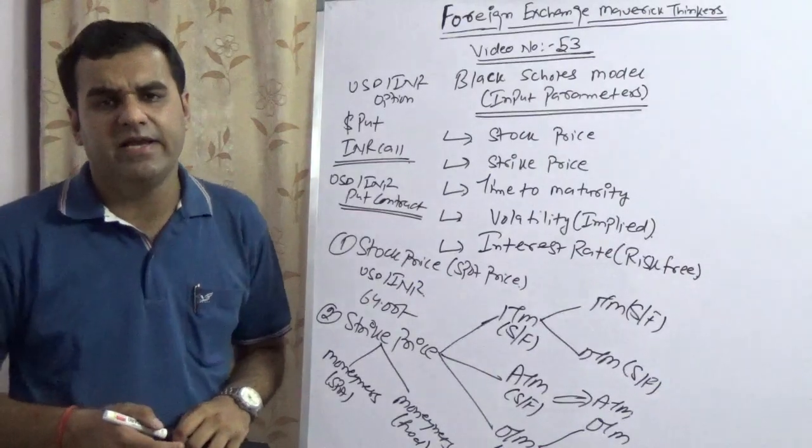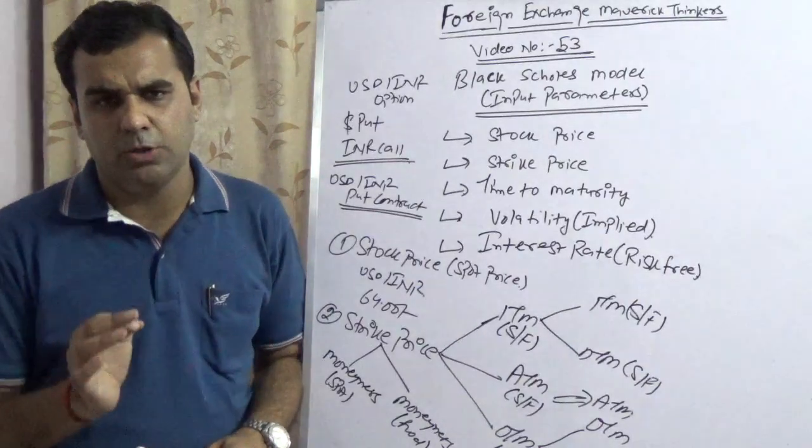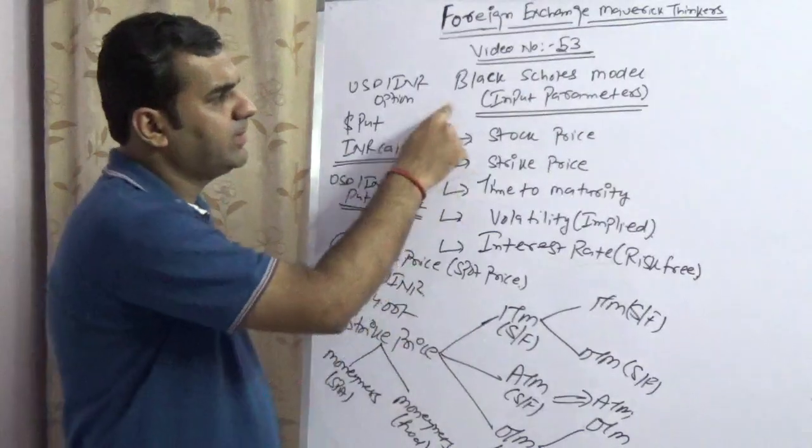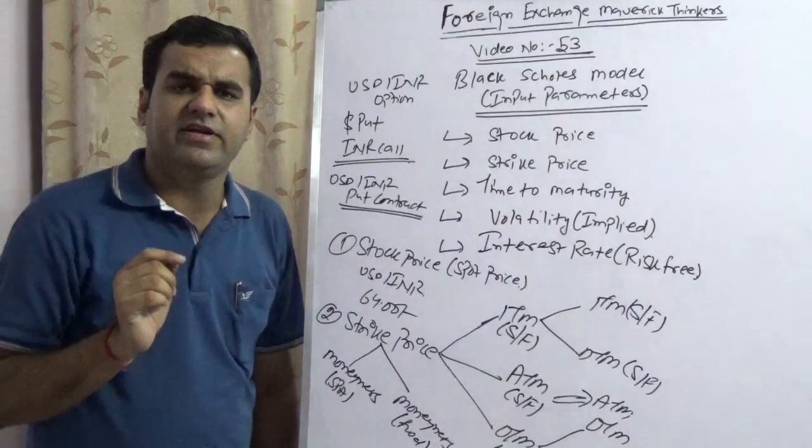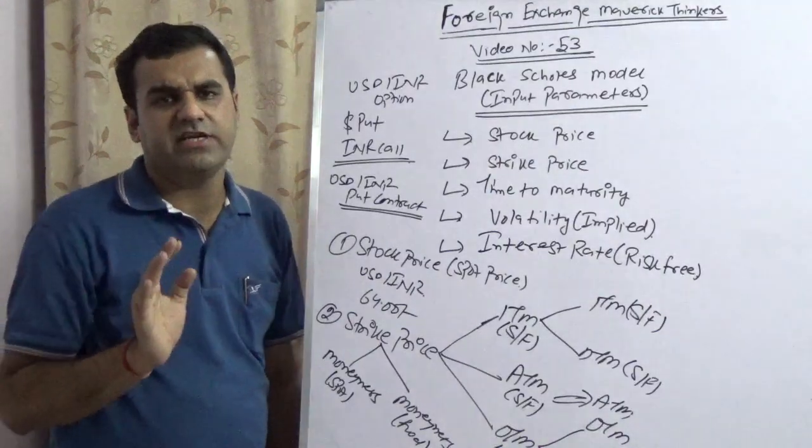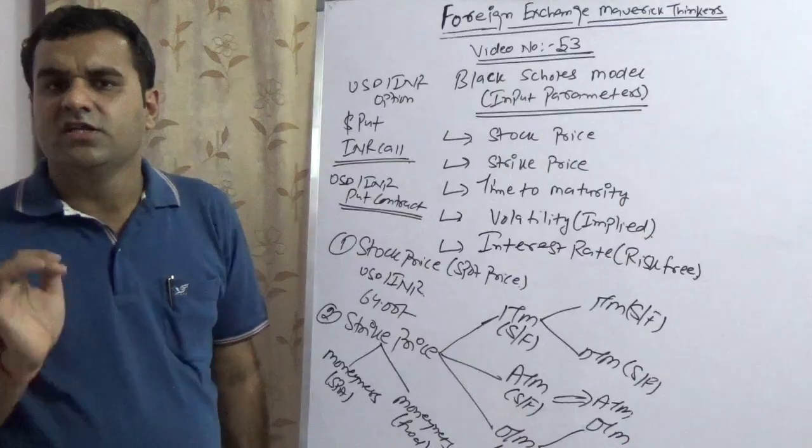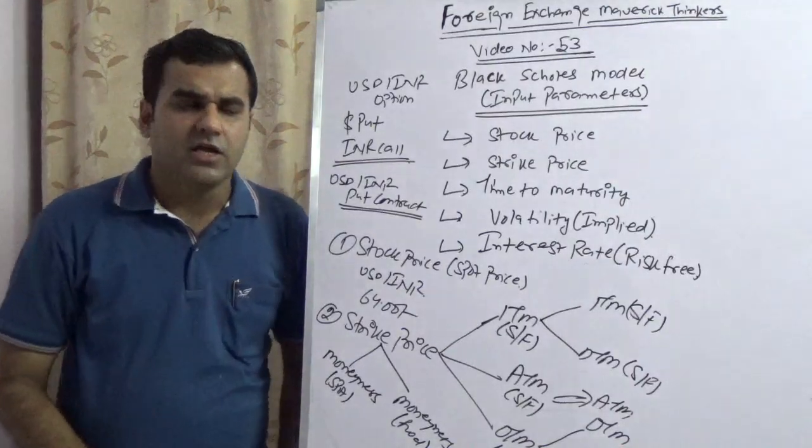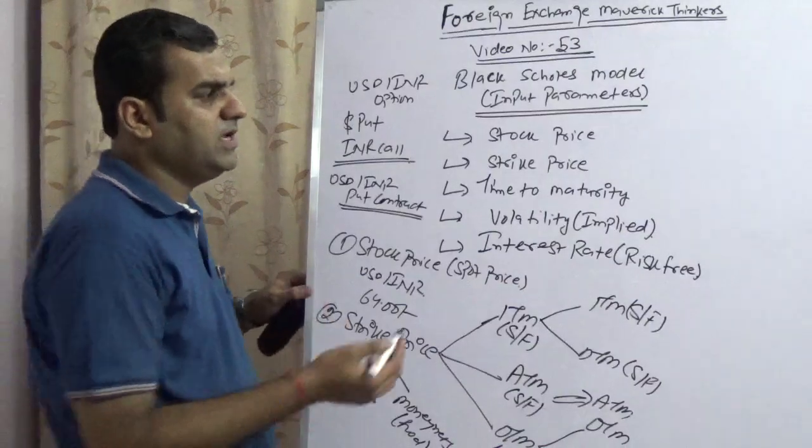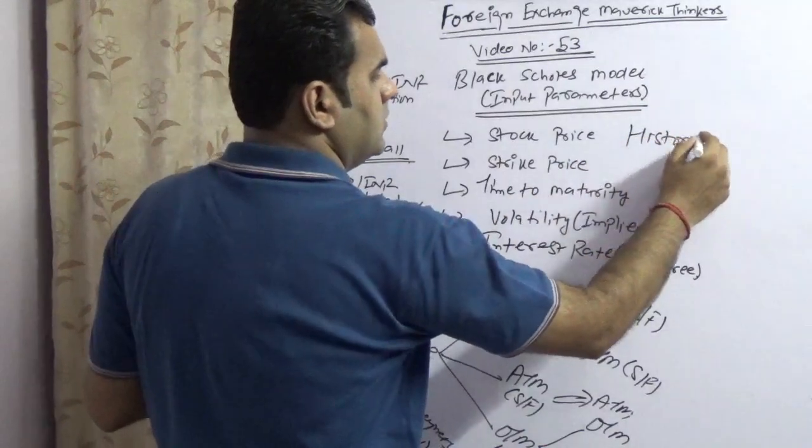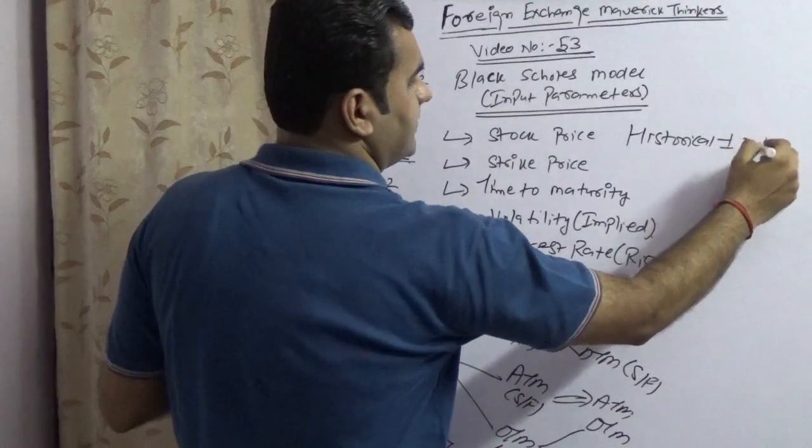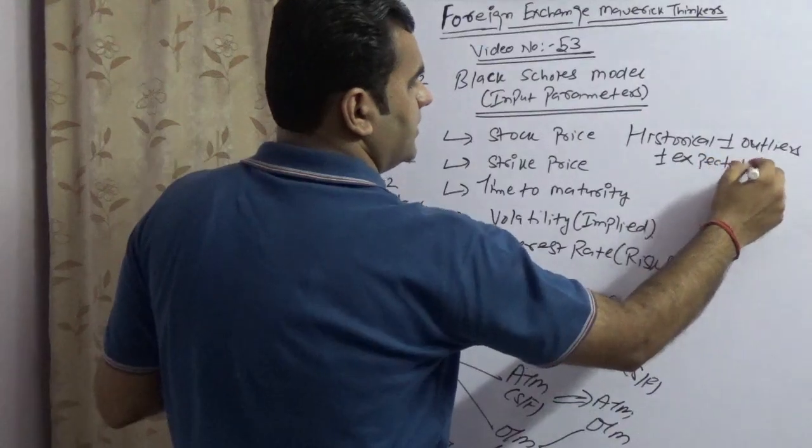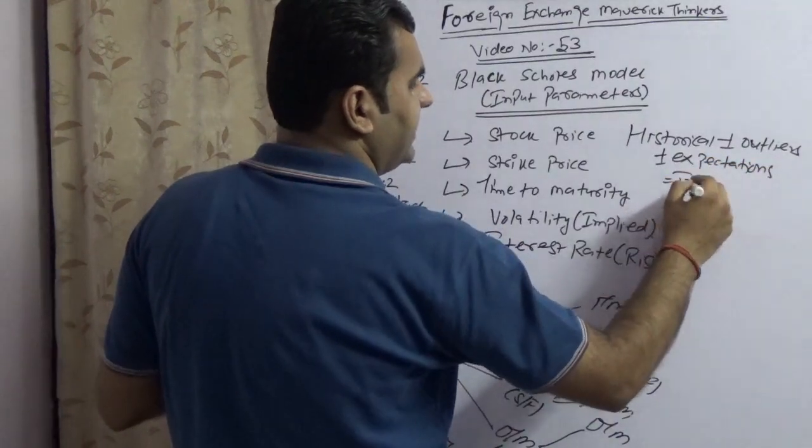The last point I would like to highlight is that volatility plays a very critical role in the pricing of an option contract. If you take the price of an option contract using Black-Scholes, then all the different traders would give you different parameters. All traders would give you different quotes. They won't tell you the volatility, they will tell you the price. Yes, it has been rightly said that the volatility of any currency would be nothing but historical plus-minus outliers, plus-minus expectations. Simplistically speaking, this would be referred to as implied volatility.